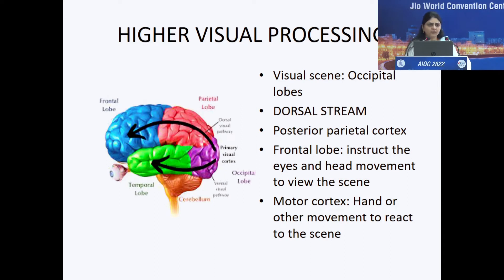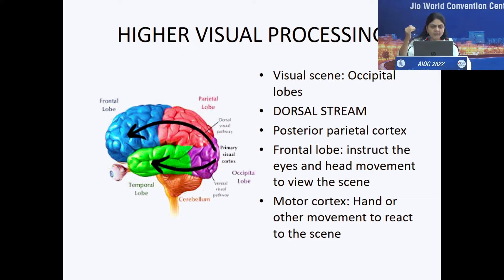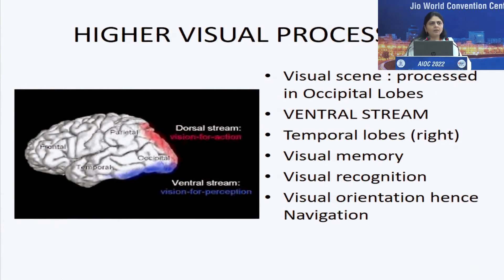What are these higher visual processes? Once a visual scene or object is seen by the occipital cortex, it will go one of two paths. The dorsal stream goes from the occipital lobe to the posterior parietal cortex, then to the frontal lobe and motor cortex. The frontal lobe gives instructions to the eyes and head to view the scene, and the motor cortex responds to the object. The ventral stream goes through the temporal lobes and helps identify what the object is and its relation to space.